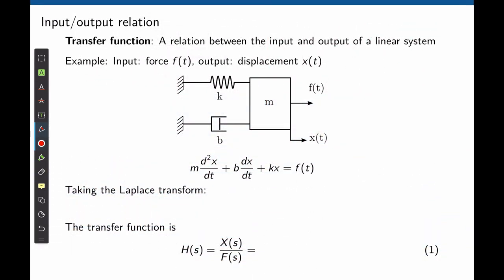The transfer function is simply the relation between the input and output expressed as a function in the Laplace domain. Let's call H(s) a transfer function — it is always defined as the output divided by the input. Let's apply this to the mass-spring-damper system. As we saw in lecture 2, we can find a differential equation that governs the displacement of the mass when a force x(t) is applied to it.